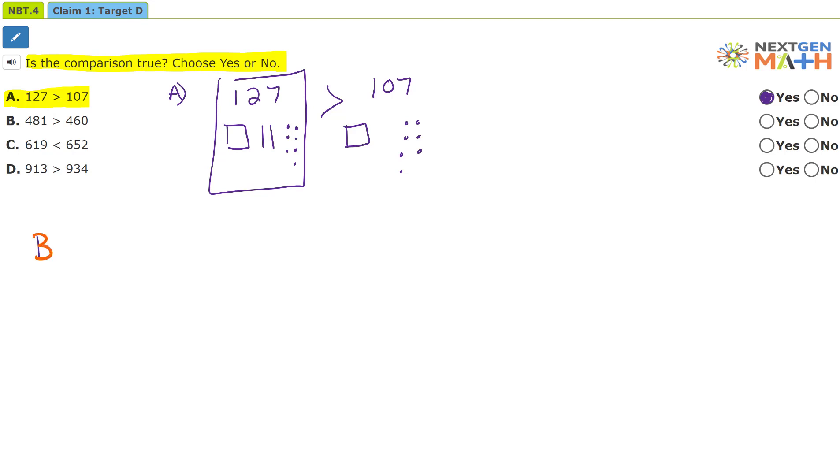Let's go ahead and do B. B is 481 greater than 460. Well, for 481, here's 400. There's the 400s. For the 80s, there's eight tens and one one. For 460...